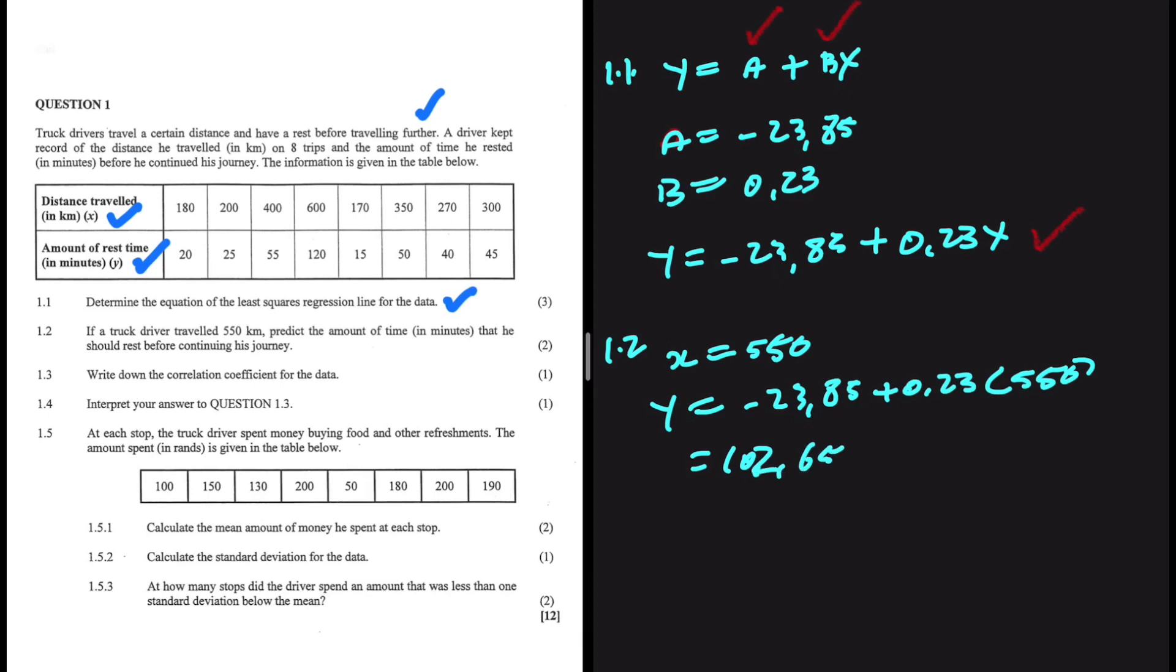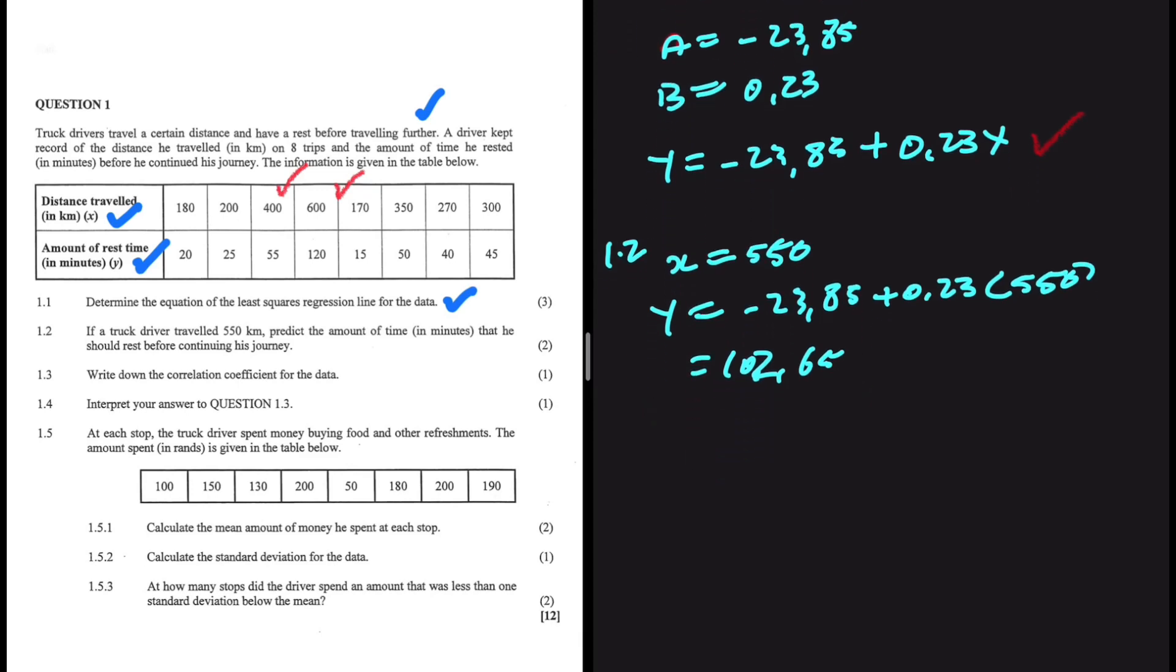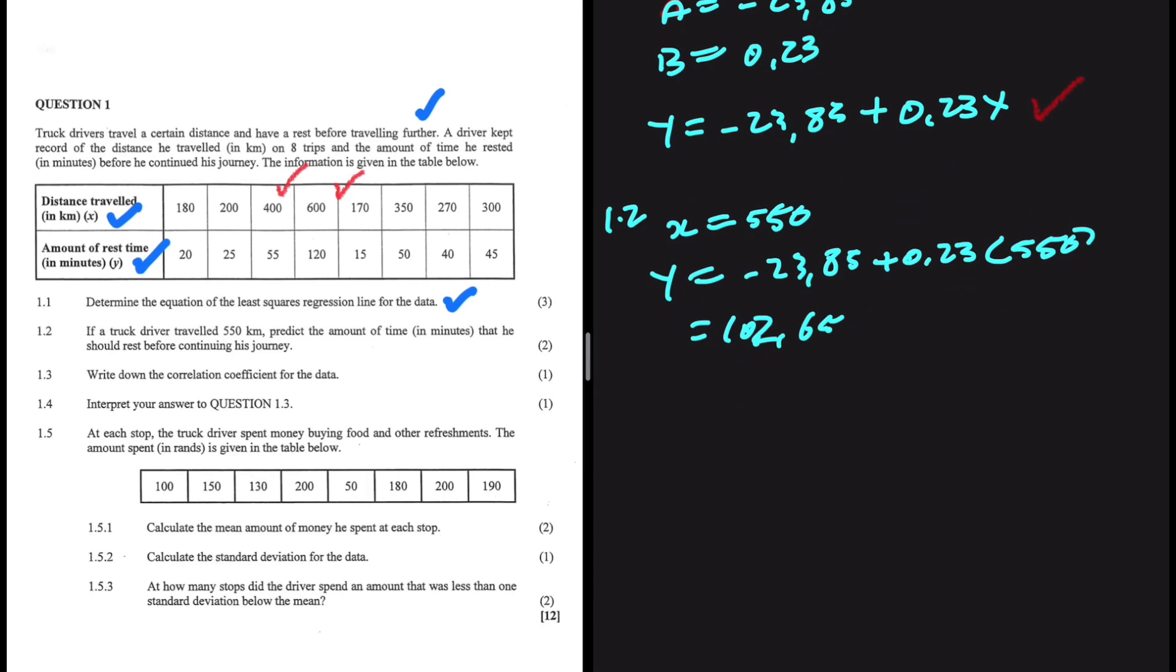Let me see if it makes sense. 400 is 55. 600 is 120. So 550 should be in between. Yeah, I'm quite happy with that answer. It makes a bit of sense, right? If it was 10 or if it was 300, then it wouldn't make any sense. Anyway, let's carry on. Let's do 1.3.